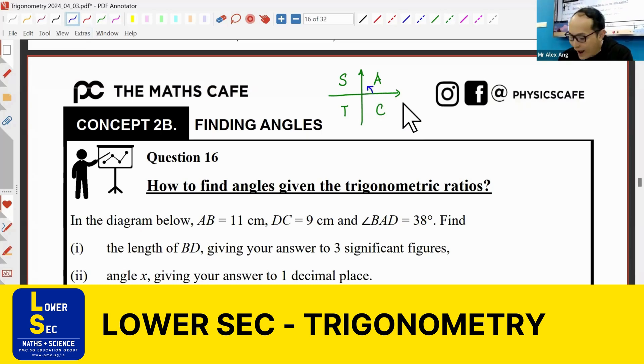A very simple one. Whatever is in this first quadrant will be our acute angle because it's less than 90. Then once you go past into the second quadrant, this will be your obtuse angle.